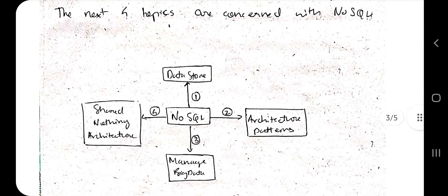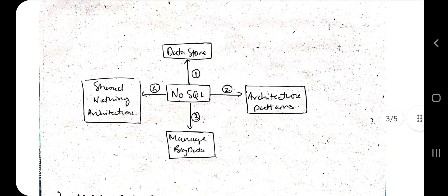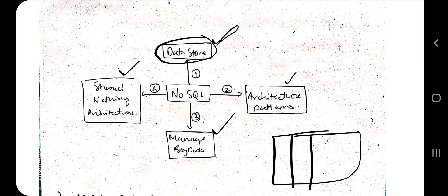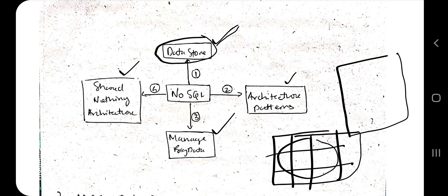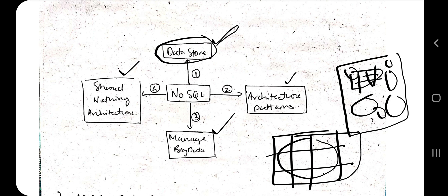Now moving on to the NoSQL topics. In NoSQL there are four topics: data store, architecture patterns, managing big data, and shard-nothing architecture. The super important questions come from all four of these. In data store, how do we store NoSQL data? SQL data has tables, rows, and columns — but NoSQL does not have that kind of architecture. Instead it has a blank space; it is very flexible and you can store images, videos, audios, documents, PDFs — everything.